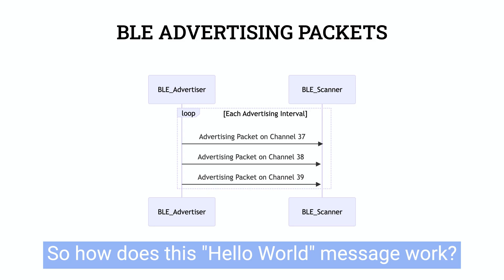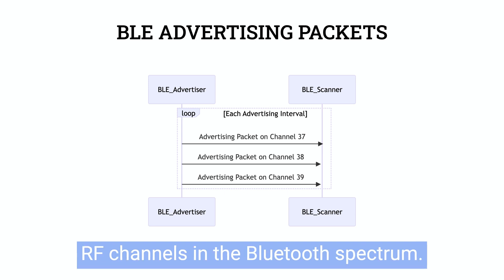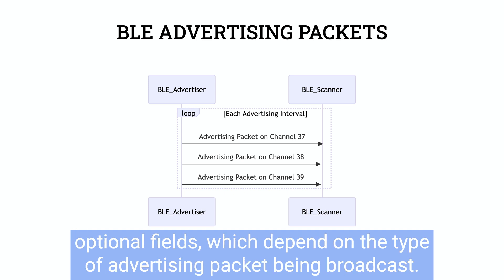So how does this Hello World message work? When a BLE device is in advertising mode, it will send out packets on three RF channels in the Bluetooth spectrum. The packets contain certain pieces of information, including mandatory and optional fields, which depend on the type of advertising packet being broadcast.